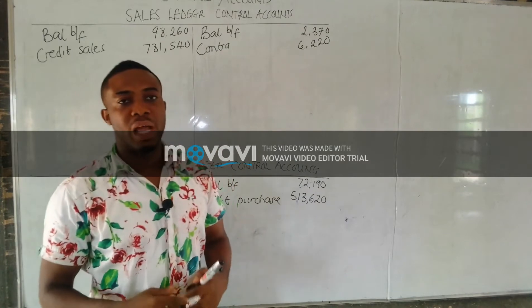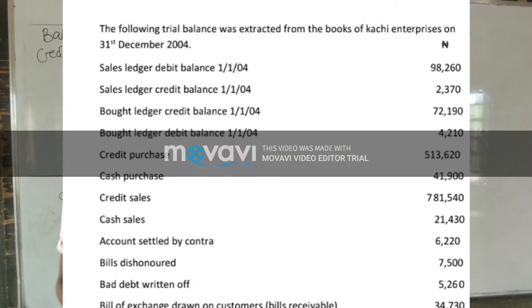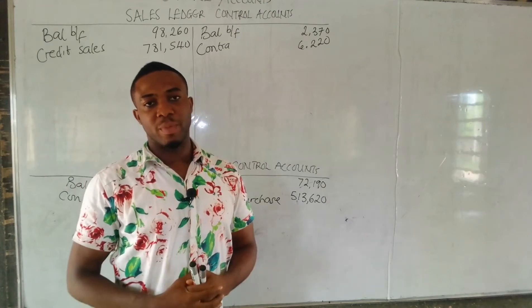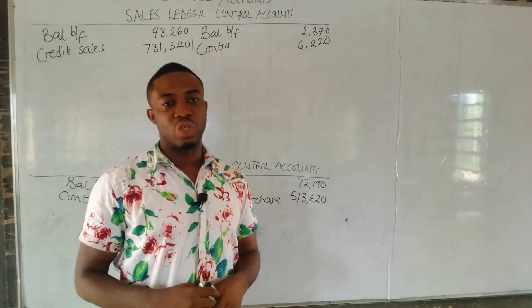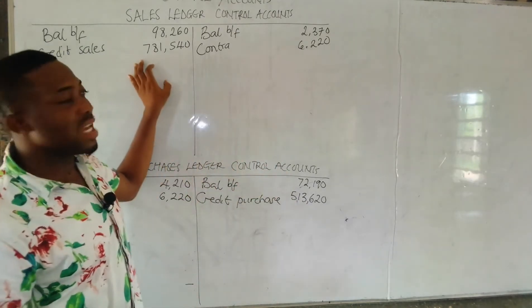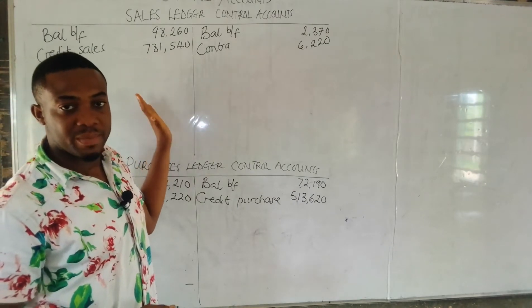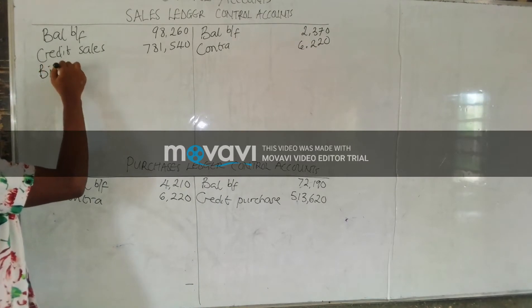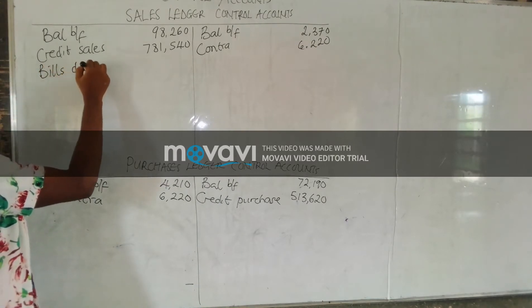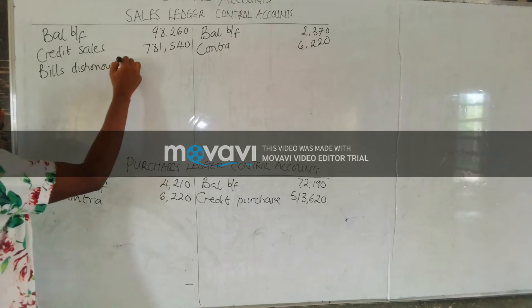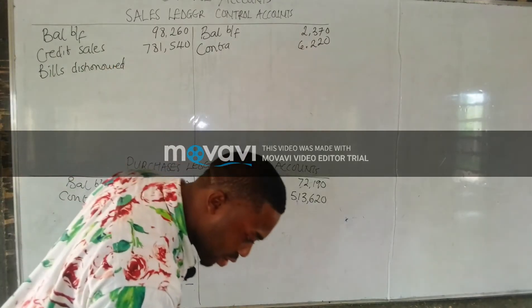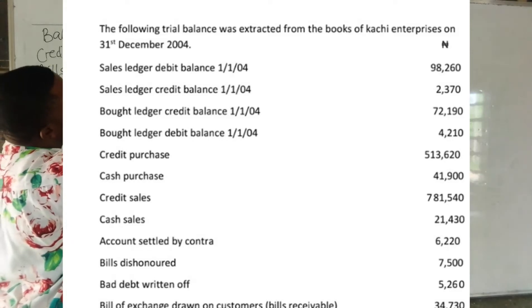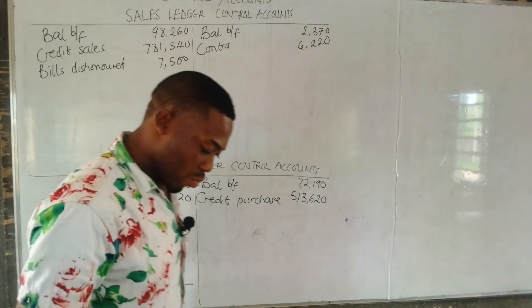The next item is bills — the bill amount is $7,500.